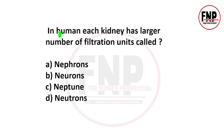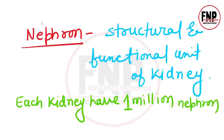Next question: in humans, each kidney has a large number of filtration units called? Options — nephrons, neurons, neptunes, neutrons। Option A, nephron, is the right answer। Nephron kidney में पाई जाने वाली छोटी-छोटी filtration units हैं, इन्हें kidney की structural और functional unit के रूप में जाना जाता है। हर kidney के अंदर लगभग 1 million यानि 10 लाख nephrons होते हैं।